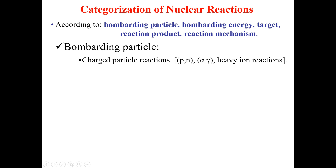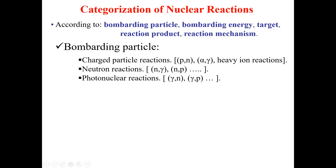Similarly, we have neutron reactions, where the projectile nucleus is a neutron. In charged particle reactions, the projectiles are mainly protons or alpha particles, producing neutrons or gamma rays. Neutron reactions are those in which a neutron is used as a projectile. In both neutron reaction examples shown, neutrons are utilized as the projectile, and finally gamma rays and protons are emitted.